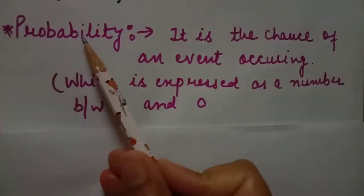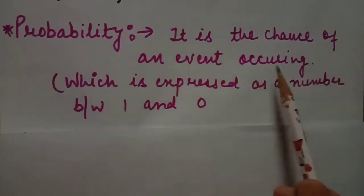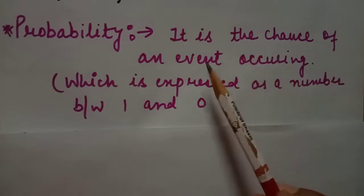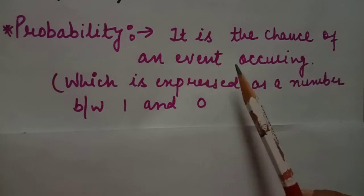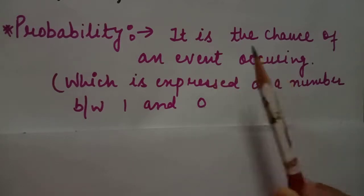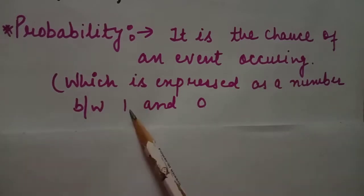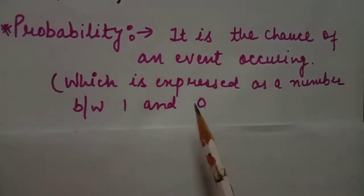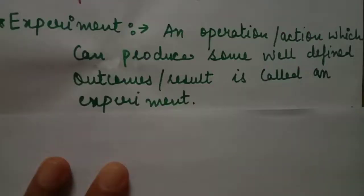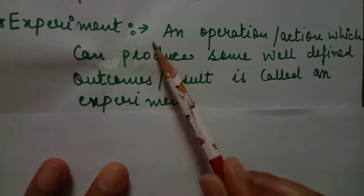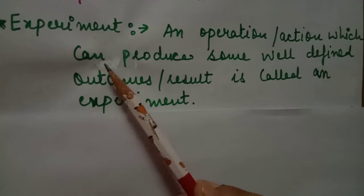What is probability? It is the chance of an event occurring — the percentage of happening of an event and the percentage of not happening of an event. This is called probability, which is expressed as a number between 0 and 1.